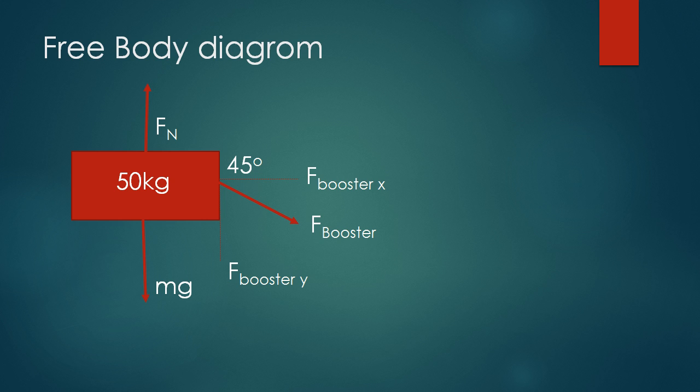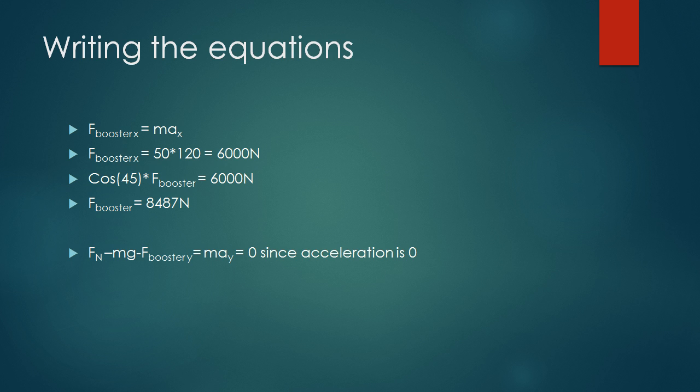Let's start off with creating the free body diagram. First of all, we would draw a block to represent the car of 50 kilograms. We got the normal force, and then we got the gravitational force, which is mass times gravity. We also have a force equal to booster, and it has an X and Y component, because it is directed at 45 degrees below the horizontal. That's where the booster is propelling the car towards.